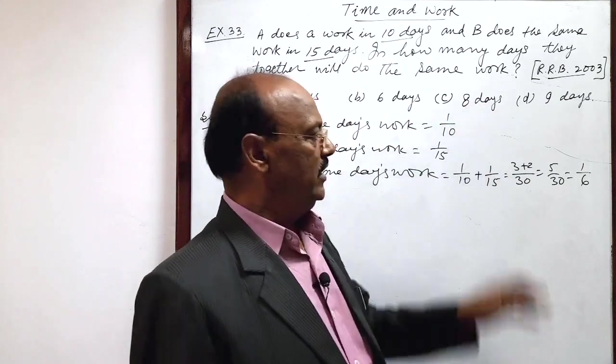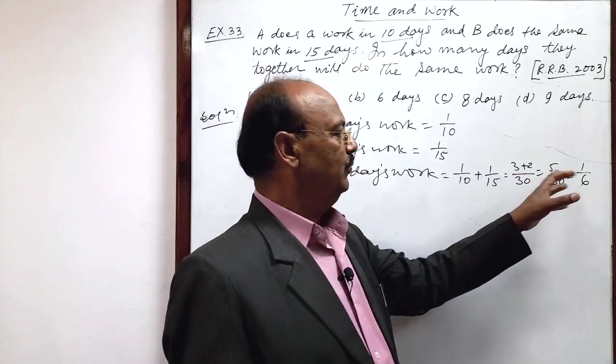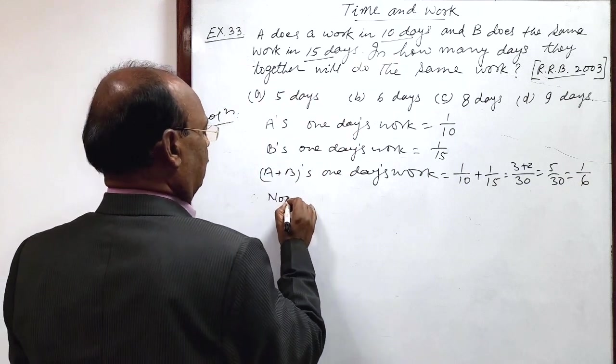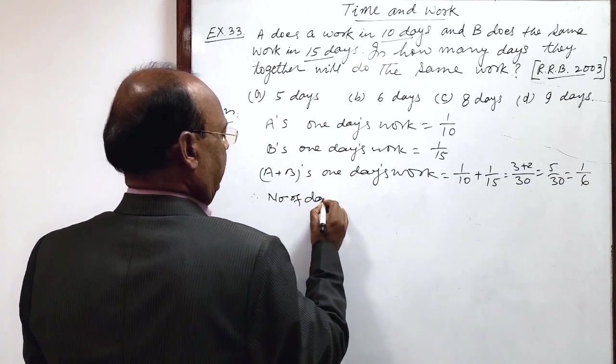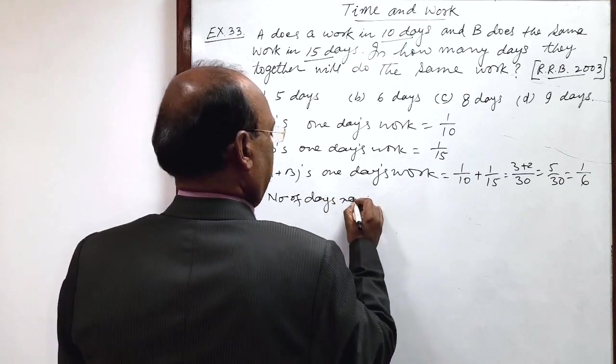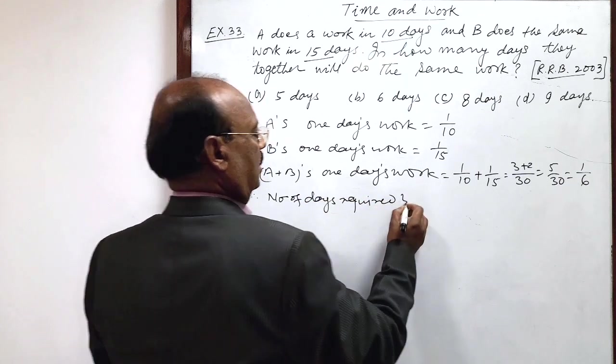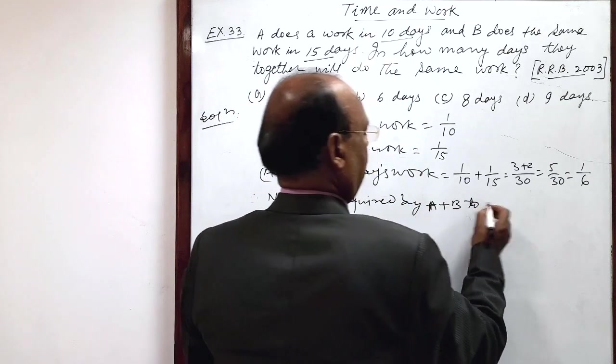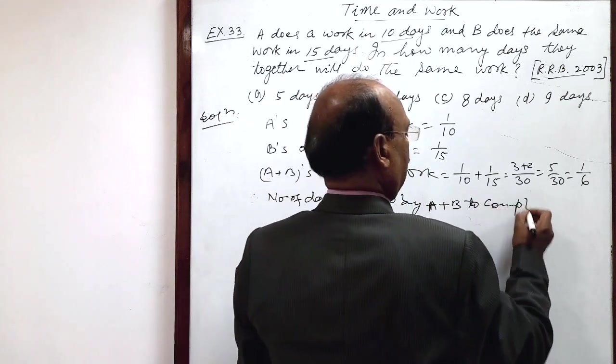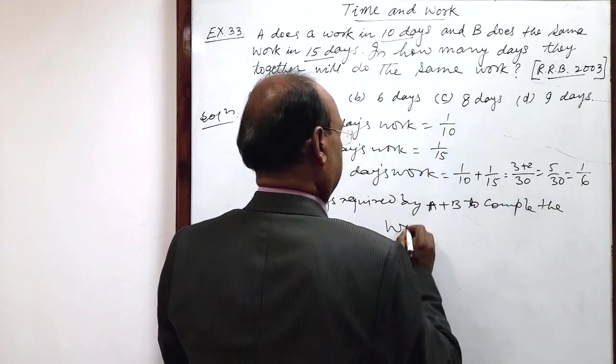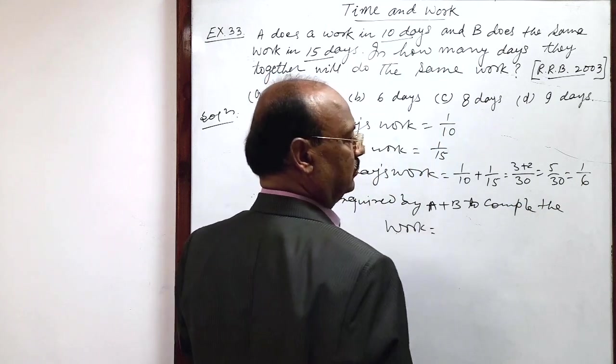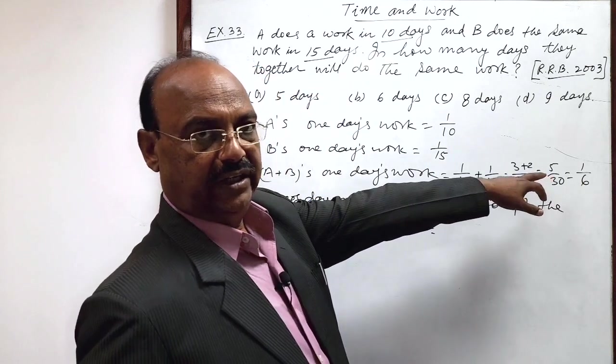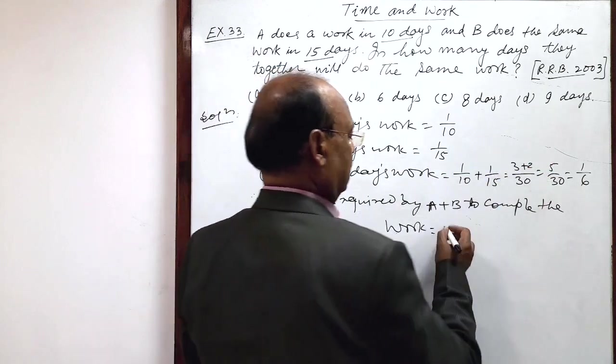Better to calculate in a very shortcut manner. Therefore, number of days required by A plus B to complete the work is equal to how much? Reciprocal of amount of the work done in one day. This is 6 days.